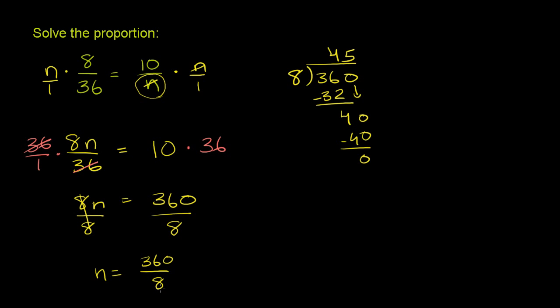So n is equal to 360 over 8, which is the exact same thing as 45. So going back to our original proportion, we now solved for n, and we know that 8 over 36 is the same exact thing as 10 over 45.